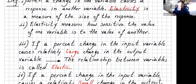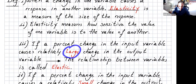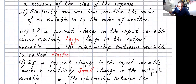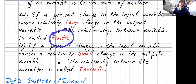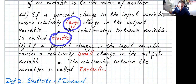If a percent change in the input variable — for example, price — causes a relatively large change in the output variable, then you say it's elastic. If a percent change in the input variable causes a relatively small change in the output variable, then the relationship is called inelastic. Remember: large change is elastic, small change is inelastic.